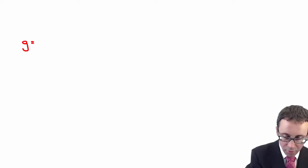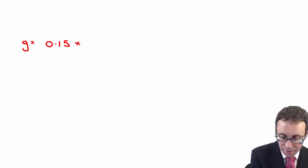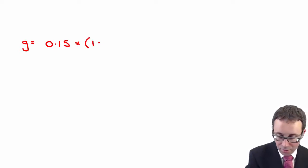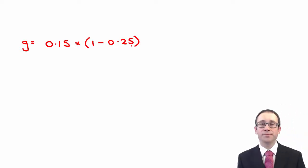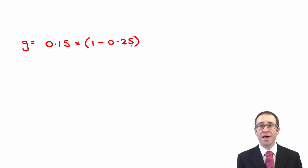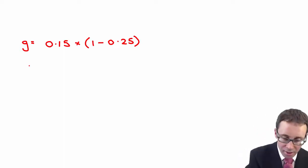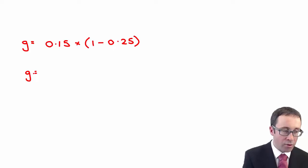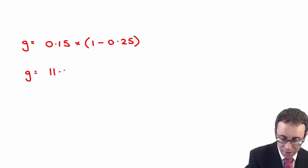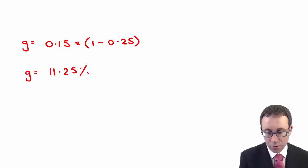Pulling all of that together, if we work out the growth rate first: the growth rate is the return of 15% multiplied by the retention. The retention is one less the payout ratio — we paid out 25% of our profits as a dividend, so we must retain 75% of them. If you tap that into your calculator, the growth rate you should get is 11.25%.